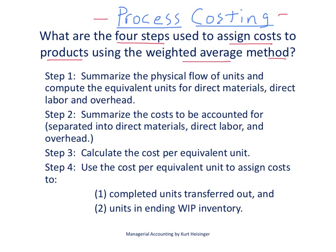I'm not going to spend a lot of time going through the four steps on this slide because we'll spend more time in the future slides going through this in detail. So let me just quickly summarize. We have four steps. The first step is to summarize the physical flow of units and then compute the equivalent units for the three product costs: direct materials, direct labor, and overhead. The second step is to summarize the costs to be accounted for.